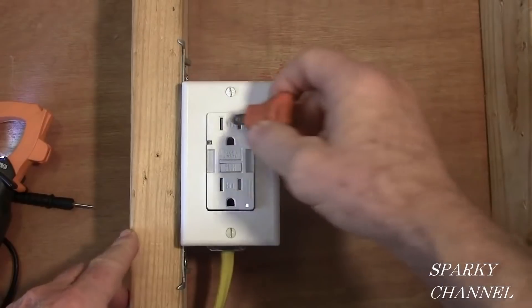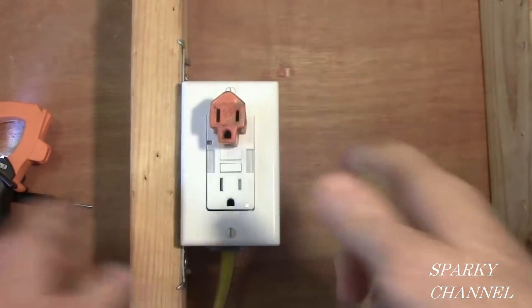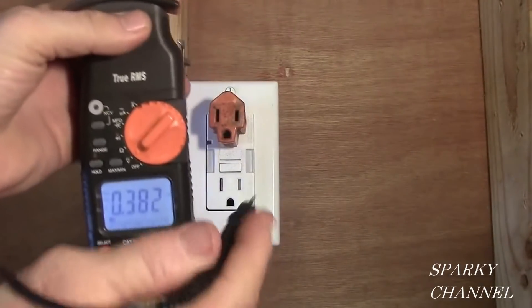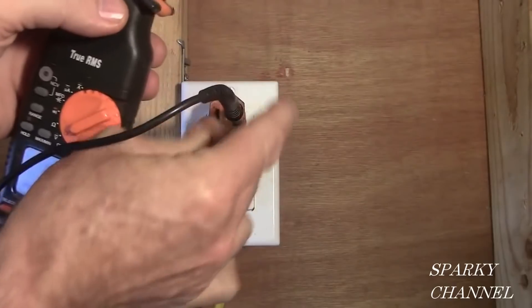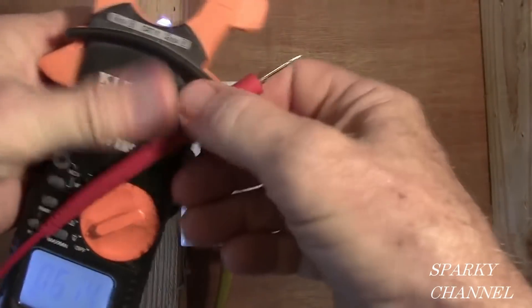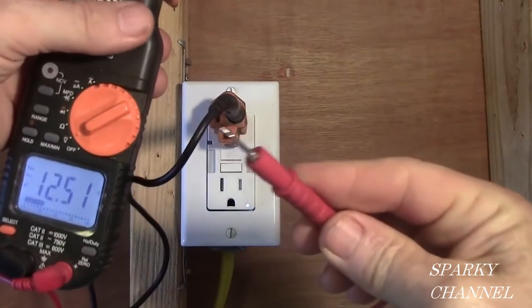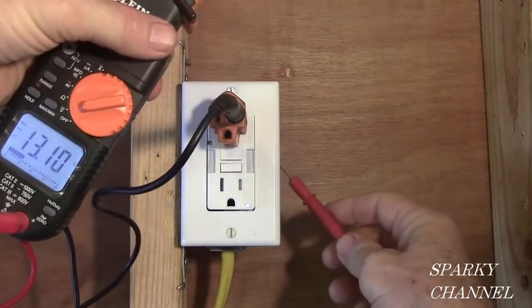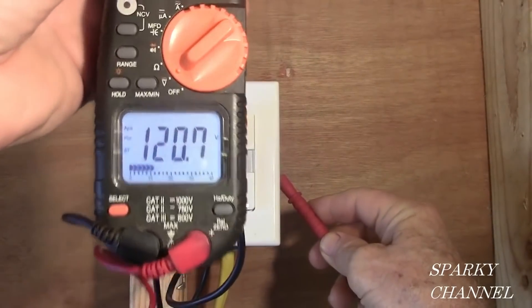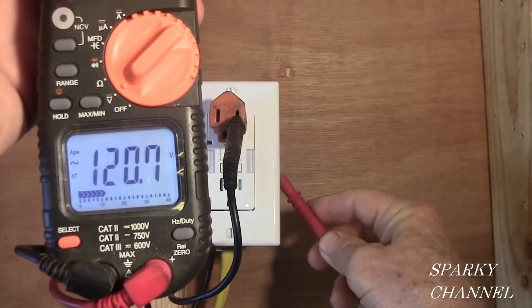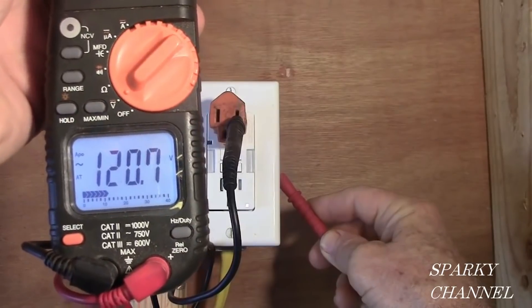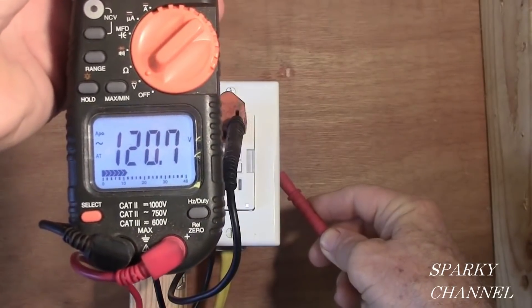So I'm going to put the adapter right in there. I'm going to put my black lead right into the positive slot of the adapter, and we're going to touch the red probe to the metal box itself. And we have 120.7 volts. So that shows you have an excellently bonded box.